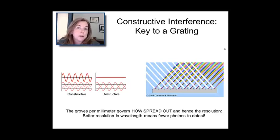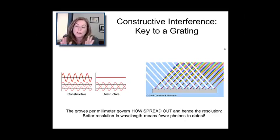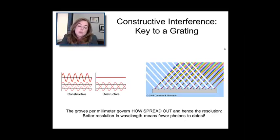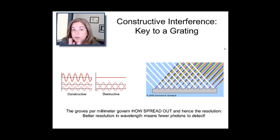The grooves per millimeter on the grating surface govern how spread out the light will be. With a different number of grooves per millimeter, you can spread light out a lot — creating a big angular difference between red and violet — or spread it out just a little for a narrow range. We'll see that in a moment.